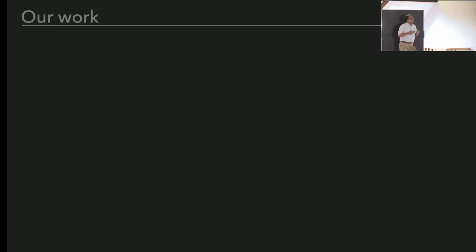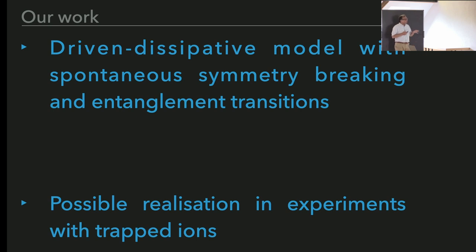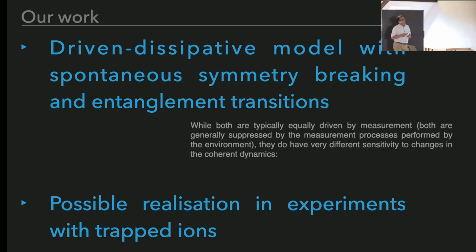Here the environment will produce local measurements on the system. In each single trajectory, a certain competition between spreading of correlation and the action of the entanglement will take place. In a nutshell, what I'm going to discuss is a model which will have both these transitions. We were originally motivated by the fact that we wanted to understand if there is an interplay whatsoever, and if one of the two will affect the other.